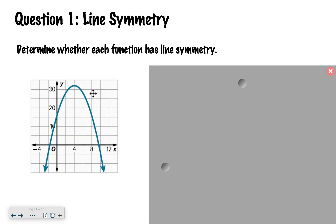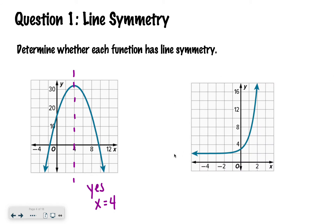Now I want you to look at this first graph and determine: does it have a line of symmetry, and if so, what is that line? Hopefully you saw that it's a parabola — and as I said, they're always symmetrical. If you draw a line at x equals 4, you have a line of symmetry. Moving on to the next one: we have this graph kind of going up. Is this symmetrical? Hopefully you said no — it's not symmetrical. There's no spot where I can draw a vertical line and get the same thing on both sides.